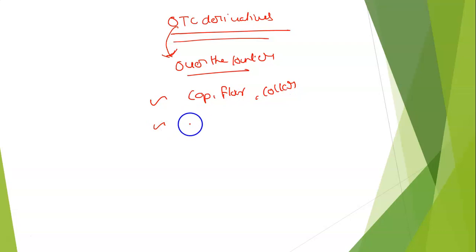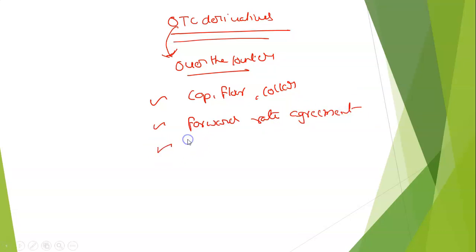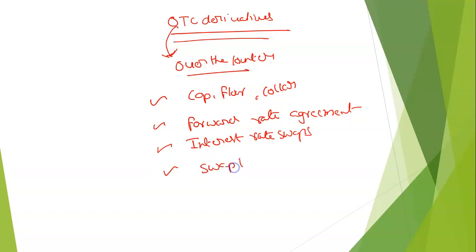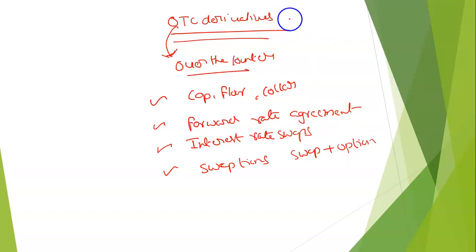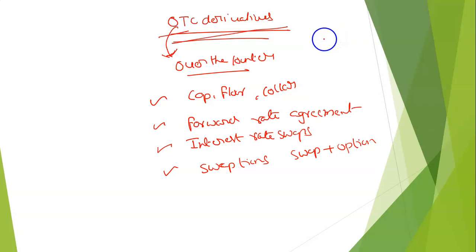We also have forward rate agreements, interest rate swaps, and swaptions — which is a combination of a swap and an option contract. In your previous topics you have already learned about types of derivatives: forwards, futures contracts, option contracts, and swaps.